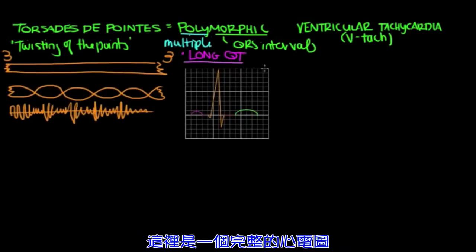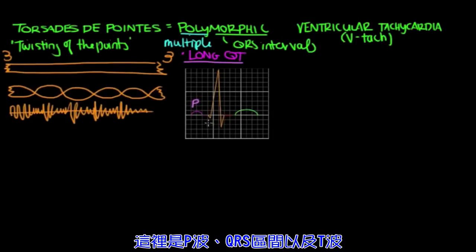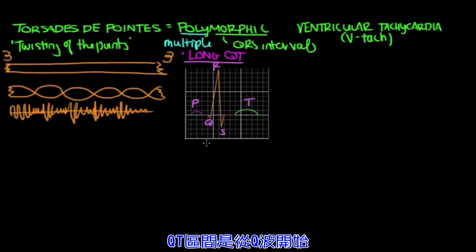Okay, so let's go over QT. Here we have a single beat on EKG. So we're going to have the P wave and the QRS interval and the T wave. And the QT interval is from the beginning of the Q all the way to the end of the T wave. That's the QT interval.